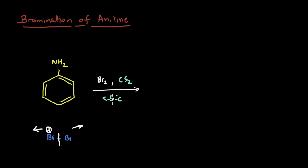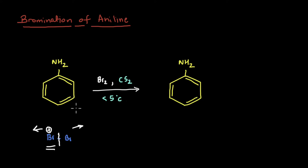We're also going to perform this reaction at a low temperature. The idea is to make very few bromines available, so that since the electrophiles will be few in number, maybe only one of them gets added, instead of all three. But if we go ahead with the reaction, we see that the bromine again gets added to all three positions - the two ortho and the para position - and again we have 2,4,6-tribromoaniline.